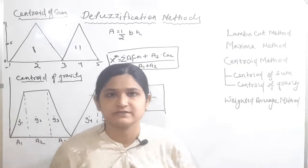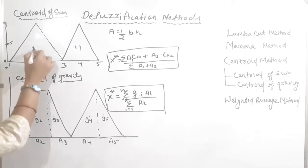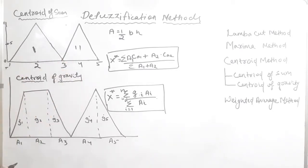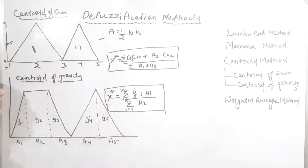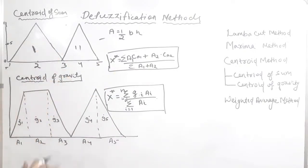First let's discuss the centroid of sum method. Here you can see a fuzzy set with two figures — figure number one and figure number two — both are triangles. For the centroid method, we have to calculate the area of each figure and multiply it with its respective centroid. The area of a triangle is half base into height.